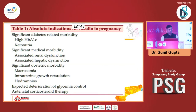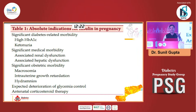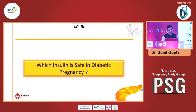There are some absolute indications for insulin. If you have a patient with renal dysfunction, hepatic dysfunction, obstetric macrosomia, IUGR, or polyhydramnios, or if steroids are being used — you should not wait for metformin. Insulin is the drug of choice in these situations.